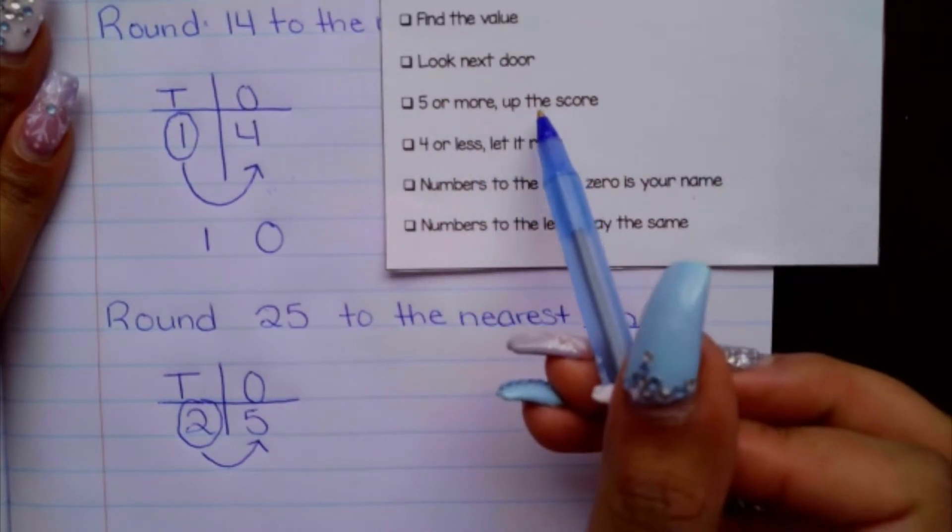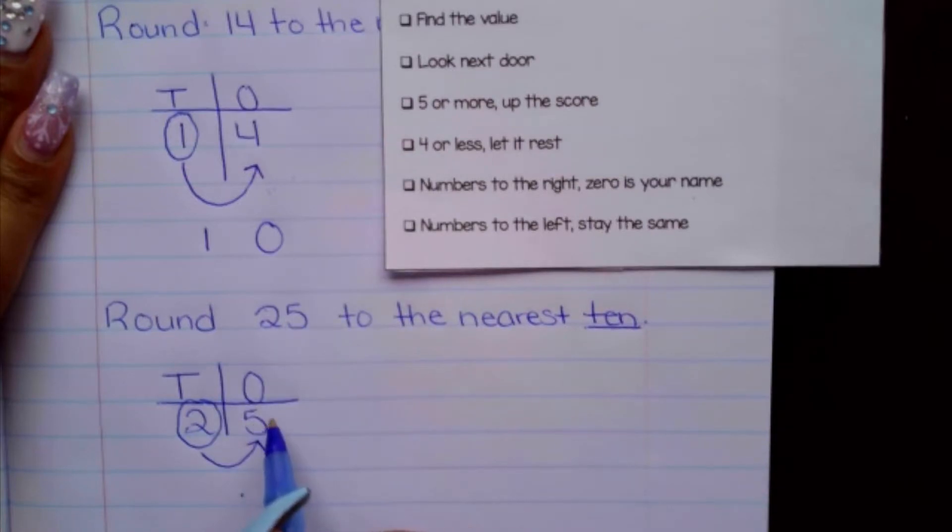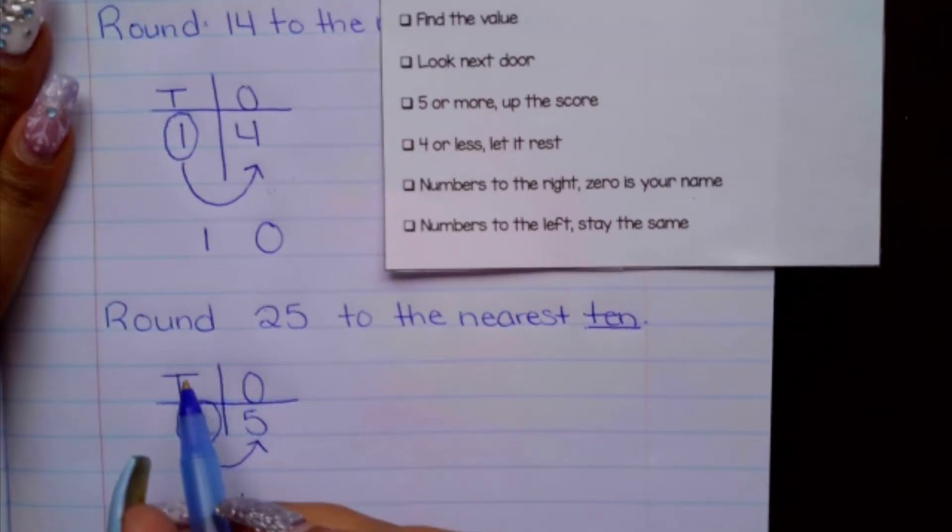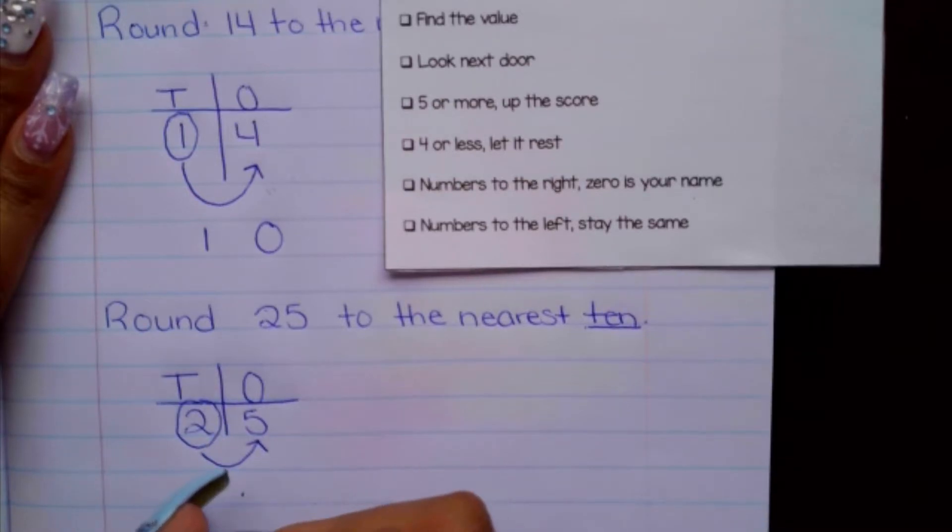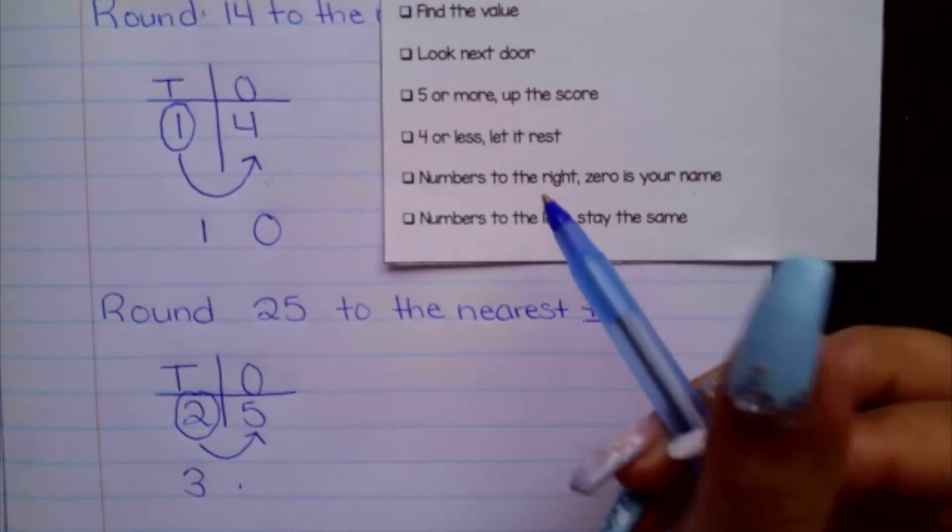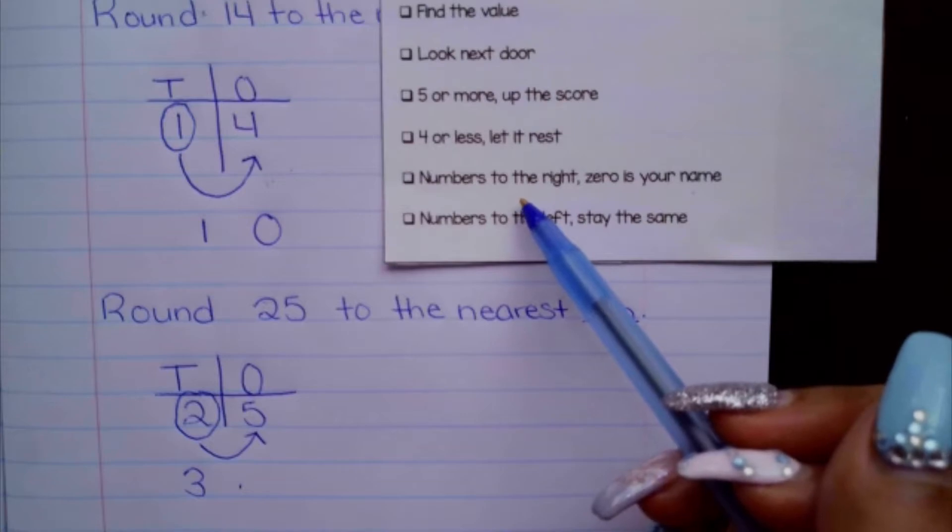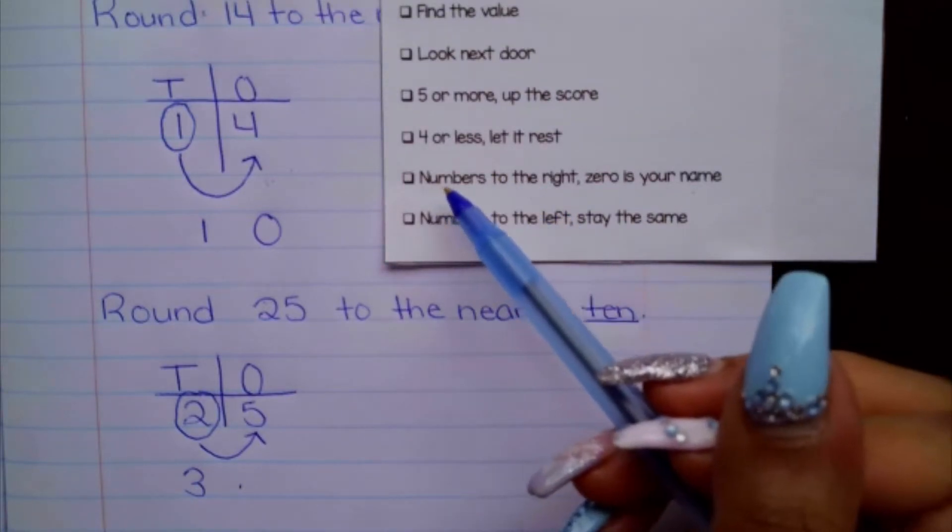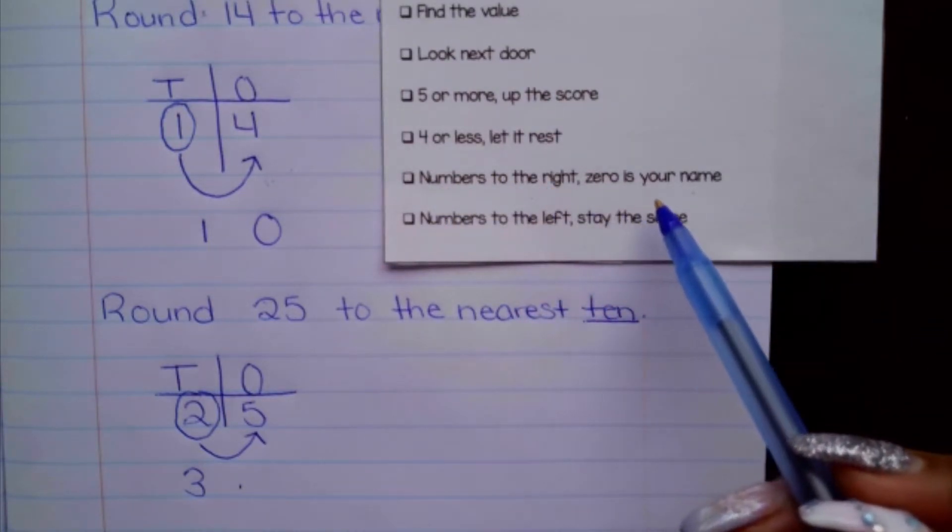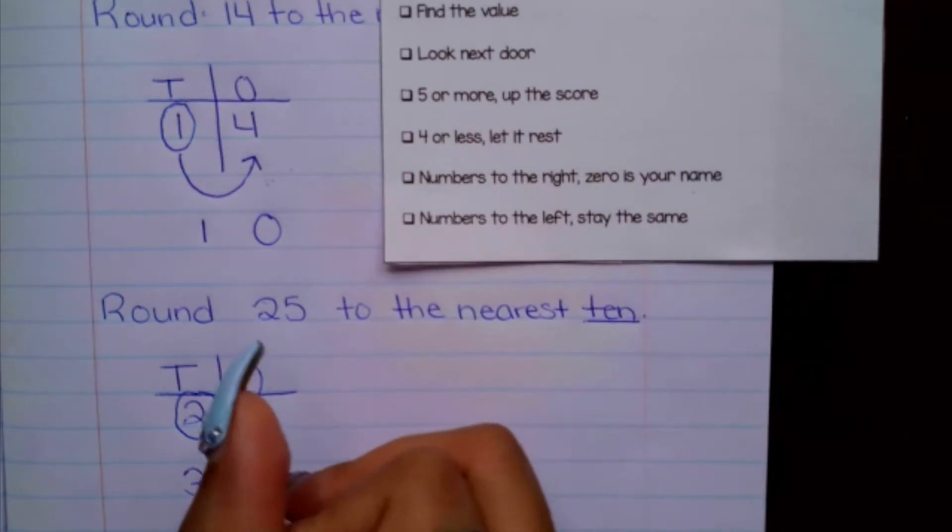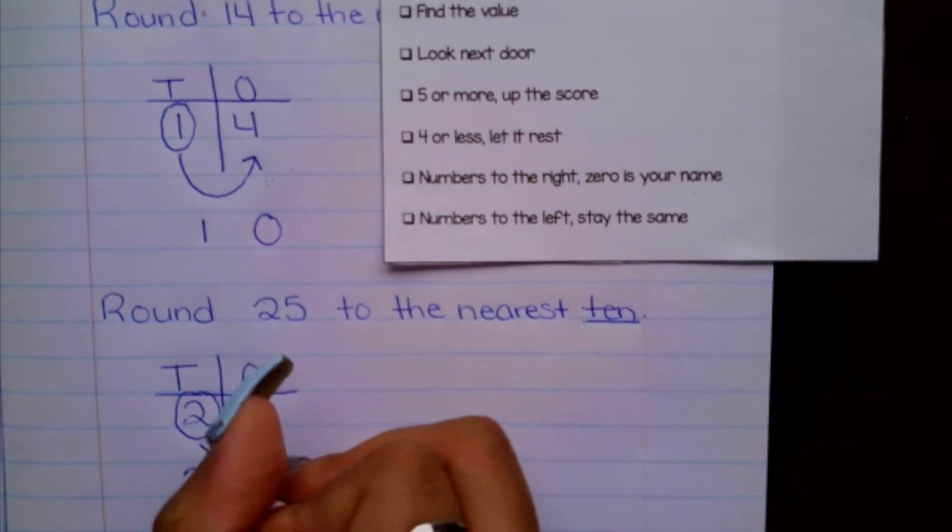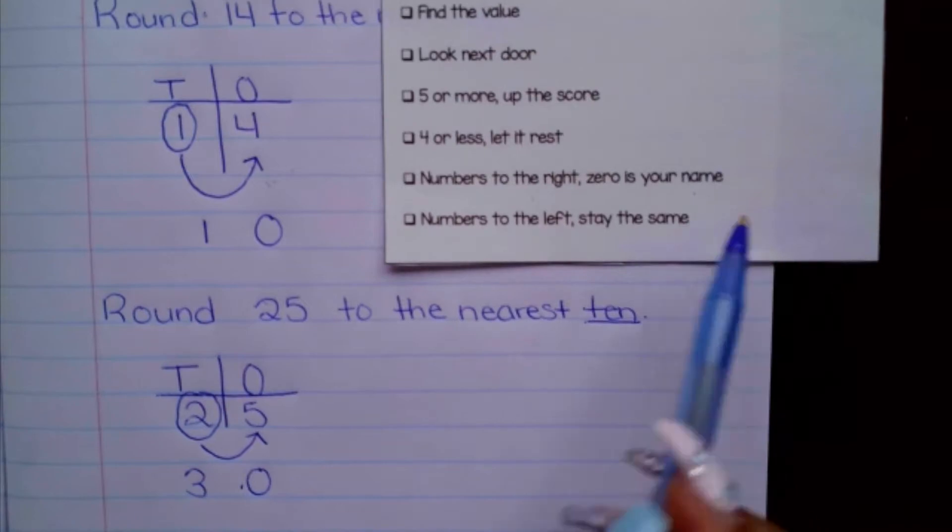It says five or more up the score. So I see that I have a five here. So that means this digit is now going to change into a three. It's going to go up one. And then that means that we would end up skipping this step. Go into our next step, which is numbers to the right, zero is your name. So that means this gets changed into zero. And numbers to the left stay the same.